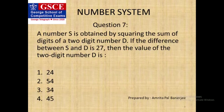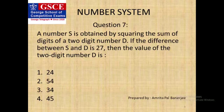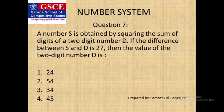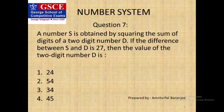Now question 7: a number S is obtained by squaring the sum of the digits of a two-digit number D. If the difference between S and D is 27, then the value of the two-digit number D is. We should not go for any conventional algebraic approach. The fastest and shortest way is option testing. The correct option is option 2, that is 54. The sum of digits of 54 is 9; 9 squared is 81; and 81 minus 54 equals 27, which satisfies the criteria. So the correct option is 54.